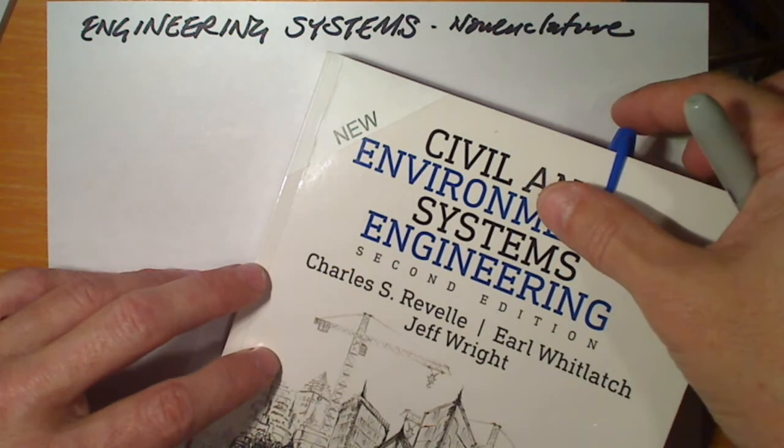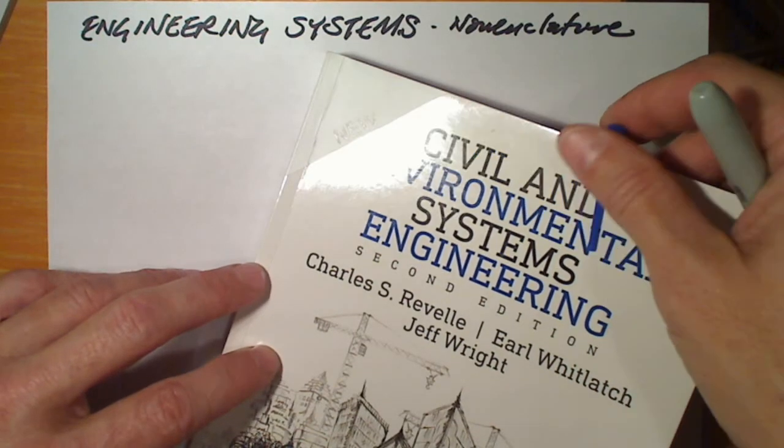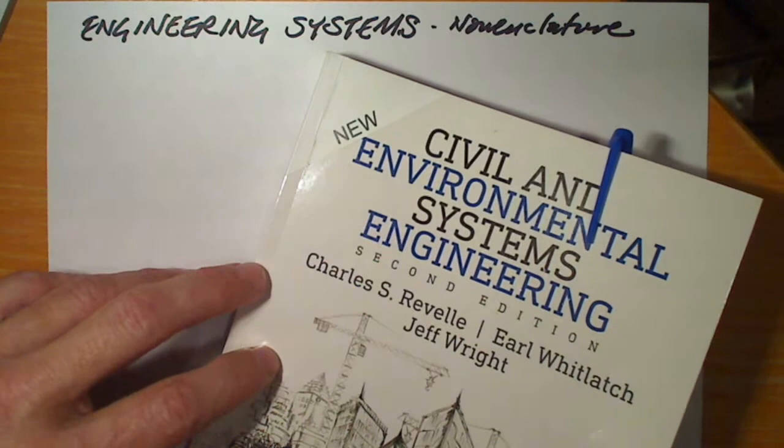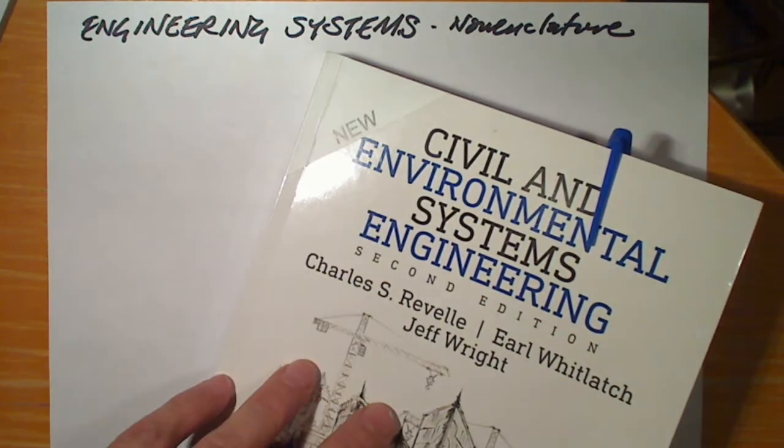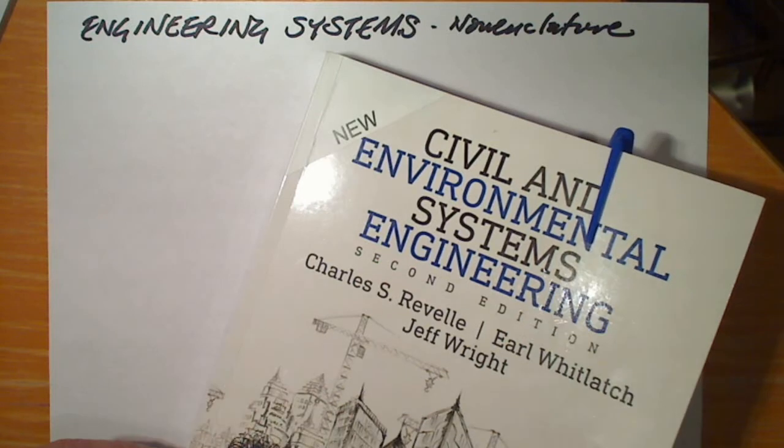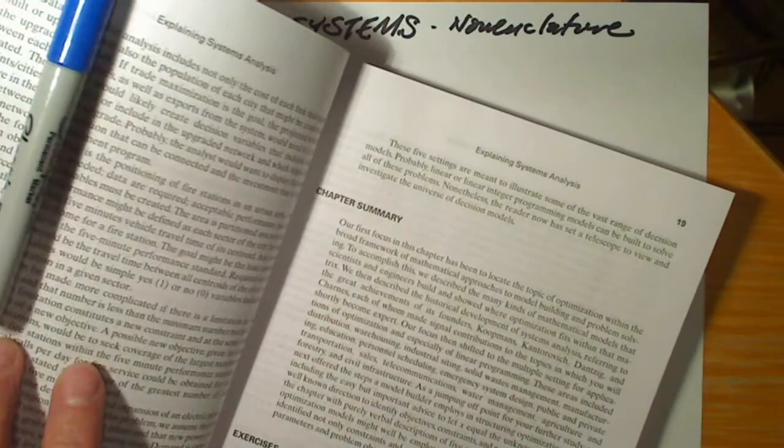One of the ways that it helps us to master the nomenclature of systems engineering is to work example problems. As usual, we're going to pick our example problems from Civil and Environmental Systems Engineering by Revell Whitlatch Wright.